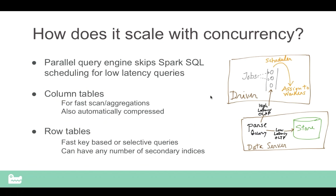How does it scale with concurrency? Spark doesn't scale particularly well with concurrency. We do things more intelligently: we immediately parse any incoming query and determine whether it's a low-latency operation — like a key lookup or put — which we can handle in microseconds with zero routing through the Spark scheduler. We also do co-location and automatic replication of dimension tables inside Spark, giving huge benefits for joins and avoiding shuffles.